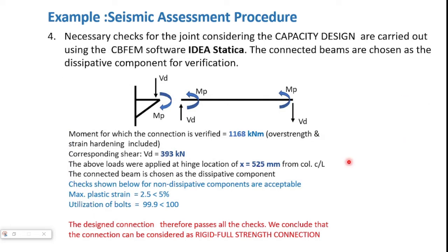Next, we proceed with the implementation of the capacity design calculation using IdeaStatica. Before that, it is important to calculate the design forces to be applied to the connecting beam. We assume the formation of a plastic hinge just at the location of the haunch end. Assuming a plastic moment of resistance MP which includes both overstrength and strain hardening, we work out the MP values and corresponding design forces to be applied at the location of the end of the haunch zone. The calculated values are: MP = 1168 kNm, accounting for overstrength and strain hardening, and the corresponding shear is 393 kN. These capacity design forces are applied at the haunch location, which is 525 mm from the column center line.